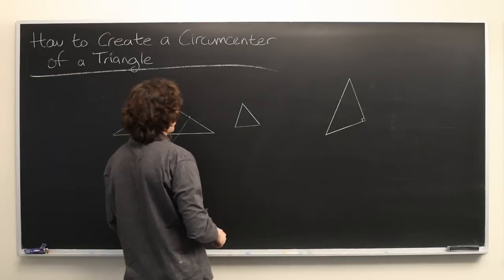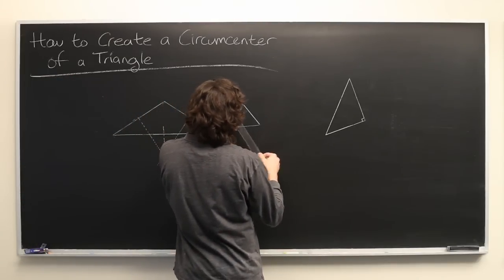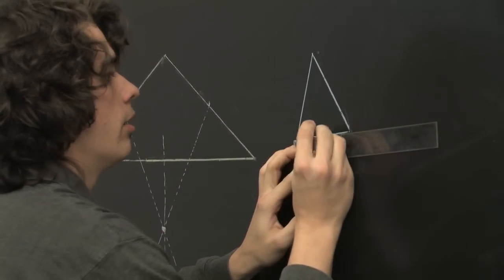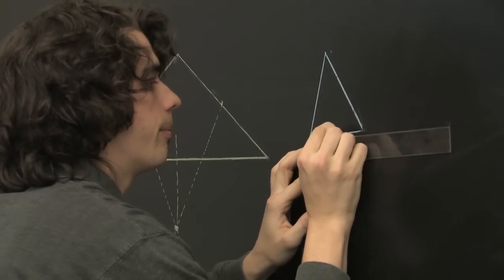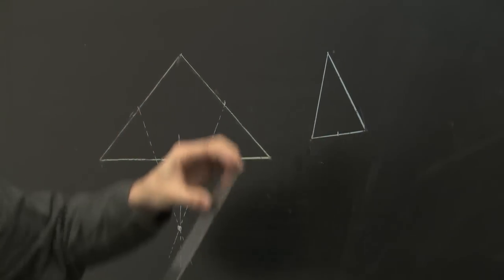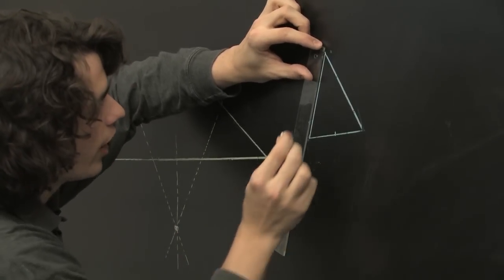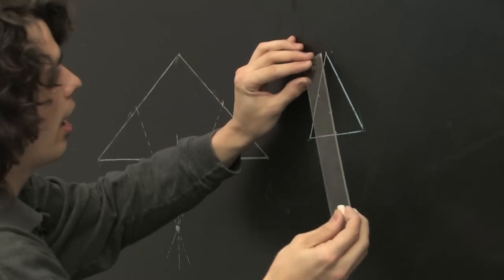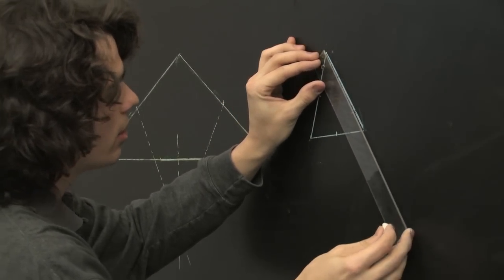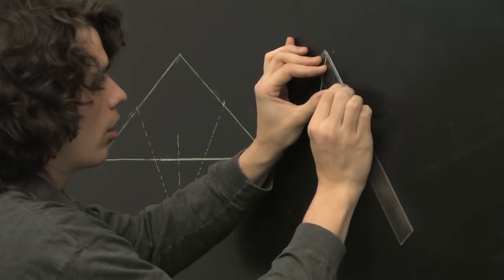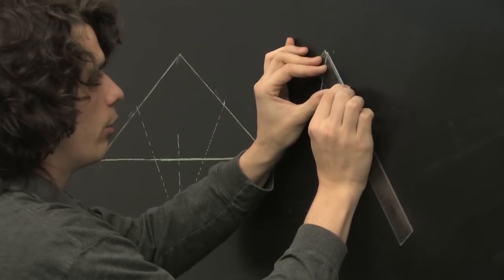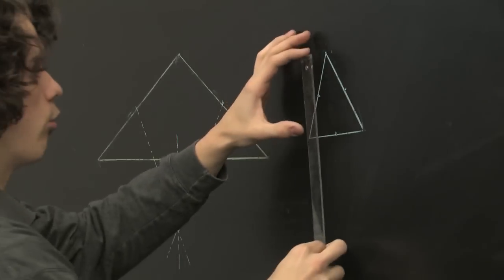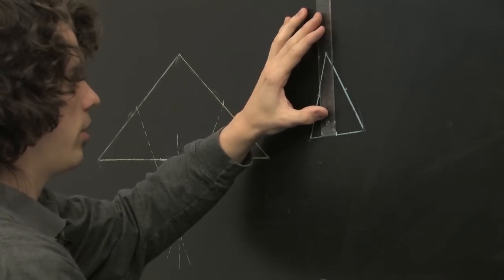Let's try it again for this triangle here. We're going to find the midpoints of our sides. This one is about five inches, so we'll mark the midpoint at two and a half inches. Same thing here — this side is also five inches, so two and a half. And then this side is five and a half inches, so we'll mark it at two and three quarters.